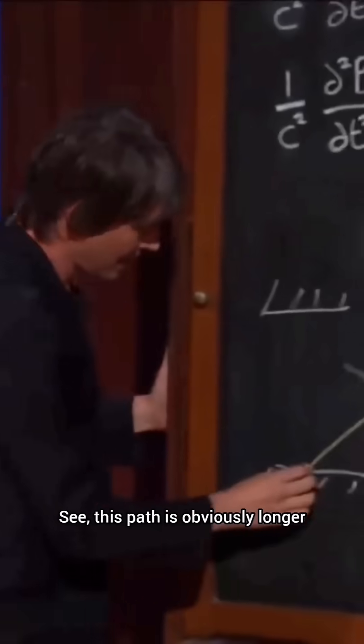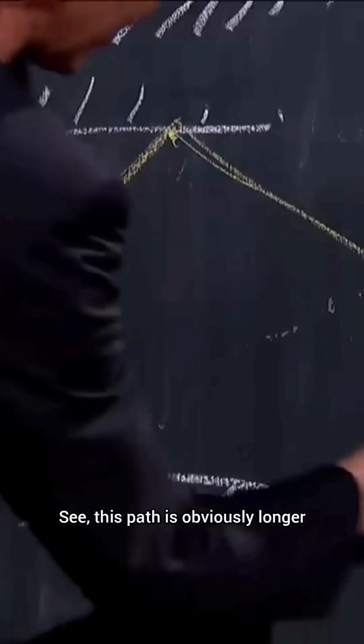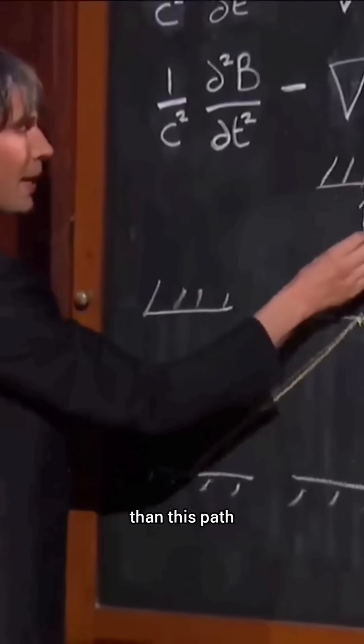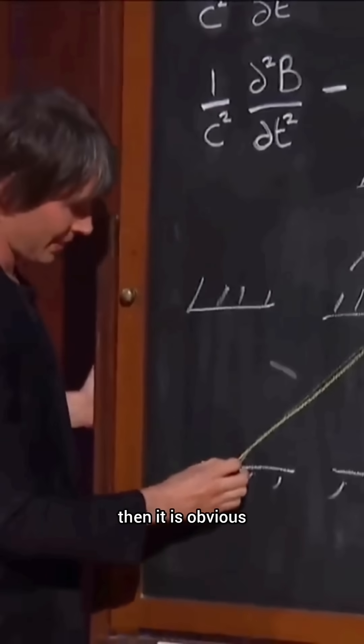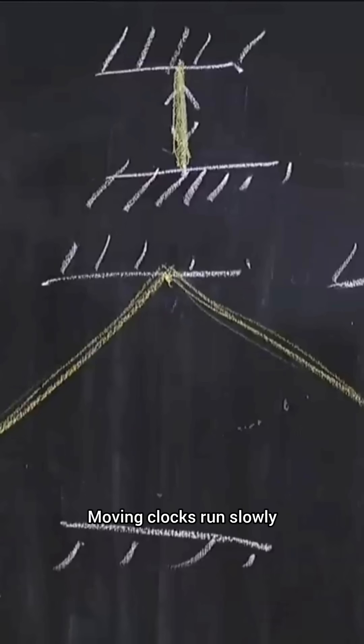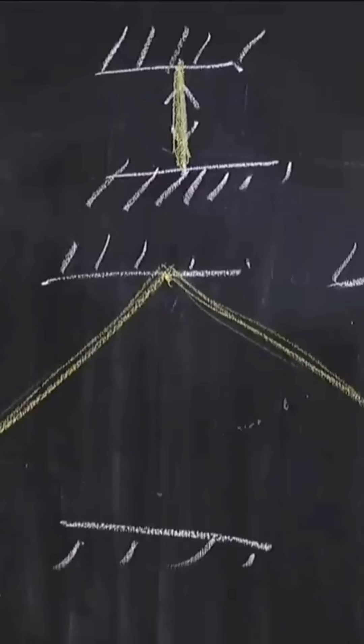This path is obviously longer than this path. So it is obvious that it must take the light longer to tick for the moving clock than it does for the stationary clock. Moving clocks run slowly. Our time...